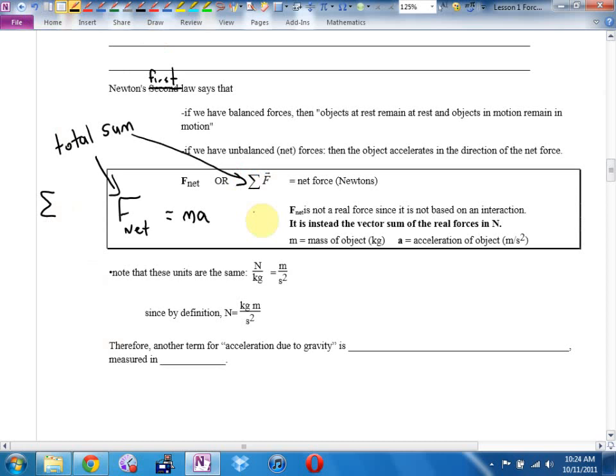Now, F net will never appear on our vector diagrams. It'll never appear on our free body diagrams. It's not a real force because it's not based on an interaction. It's the vector sum of all of the actual real forces.